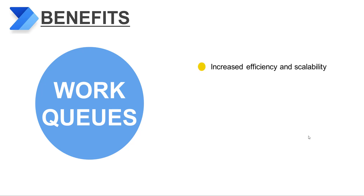Now we will see the benefits of work queues. The first benefit is increased efficiency and scalability. Work queues can increase the efficiency and throughput of an automation process by helping to ensure timely and resilient completion of work. They can also help decouple parts of our automation so that we can scale them independently.